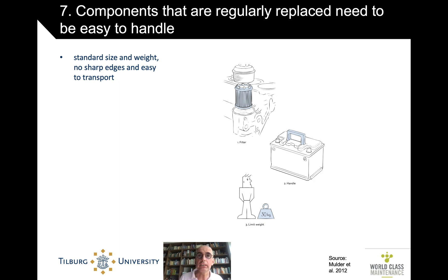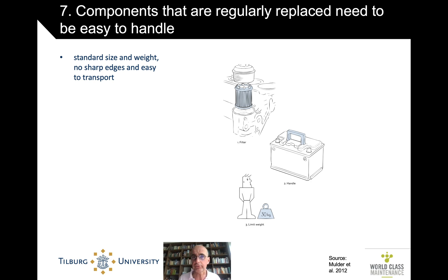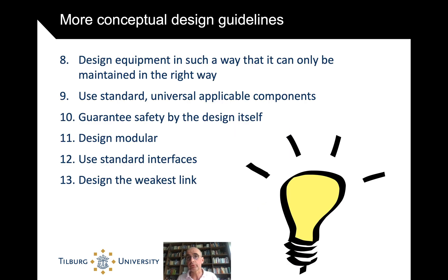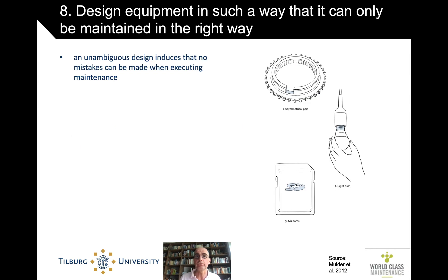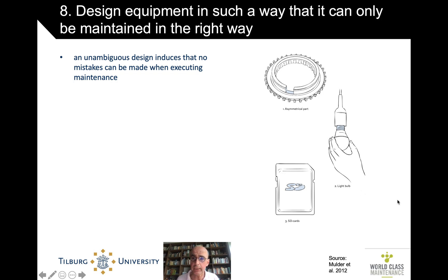When you need to replace certain components often, make sure they are easy to handle — don't make them too heavy, include a handle, make filters easy to replace, use standard sizes and weights, and avoid sharp edges. More conceptual design guidelines: make it foolproof, like an SD card in your mobile phone that can only fit in one way, or a light bulb that can only be screwed in correctly.